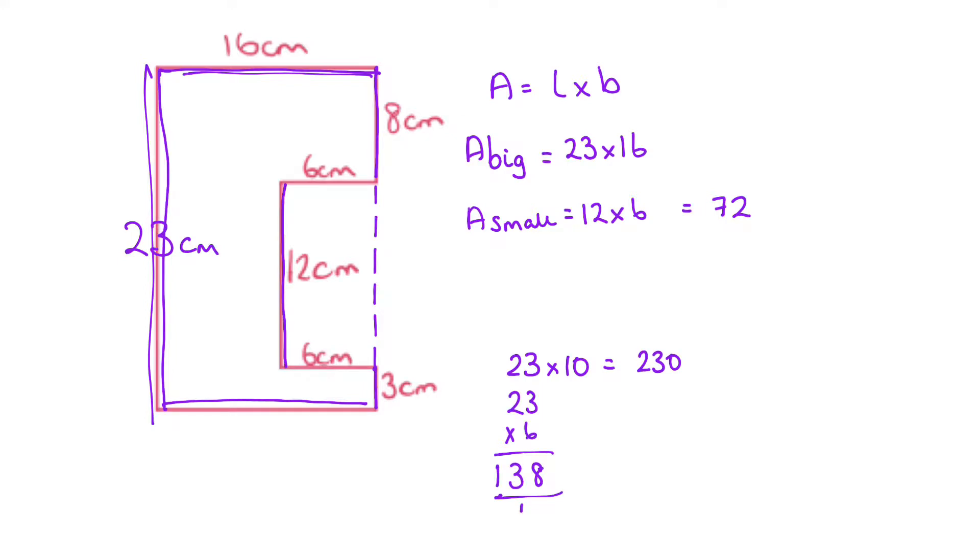So we've got 230 and 138 makes 368. So when we find the area that we're looking for, we're going to subtract the 72 from the 368. So we're doing 8 take away 2 is 6, 6 take away 7, we need to borrow 1, 16 take away 7 is 9, 2 take away nothing is 2. So 296 square centimetres for the area of that C shape.